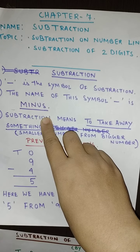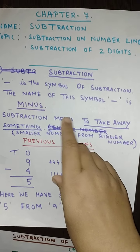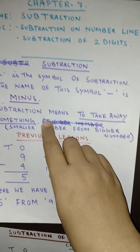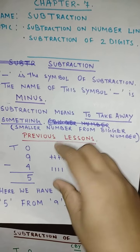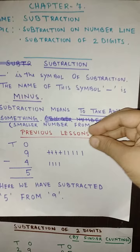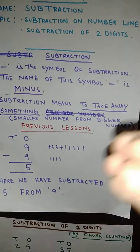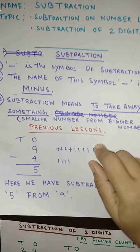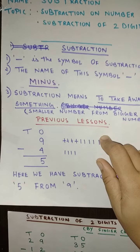So what is subtraction? Subtraction means to take away something. So what we will take away? We will take away some smaller number from one bigger number. Now if I have a bigger number with me, so I am going to take away the smaller number from that bigger number. And that is what subtraction is.